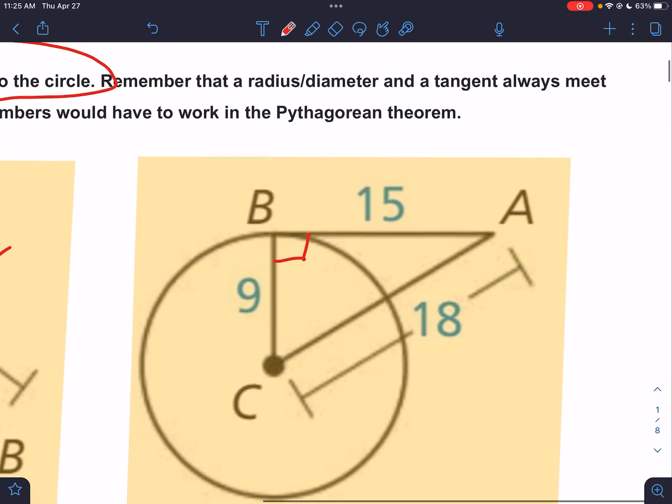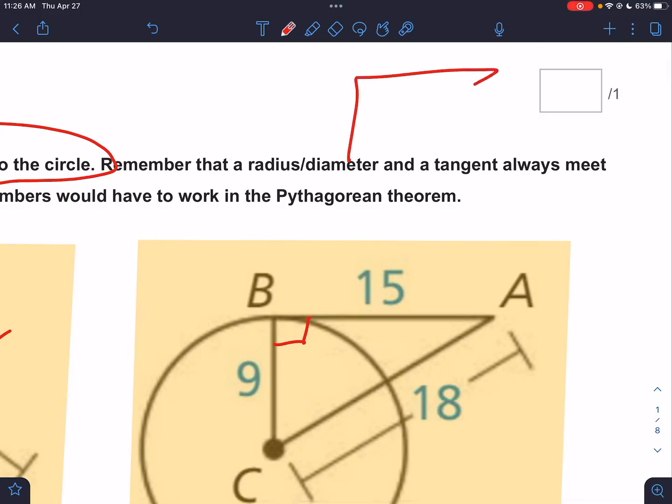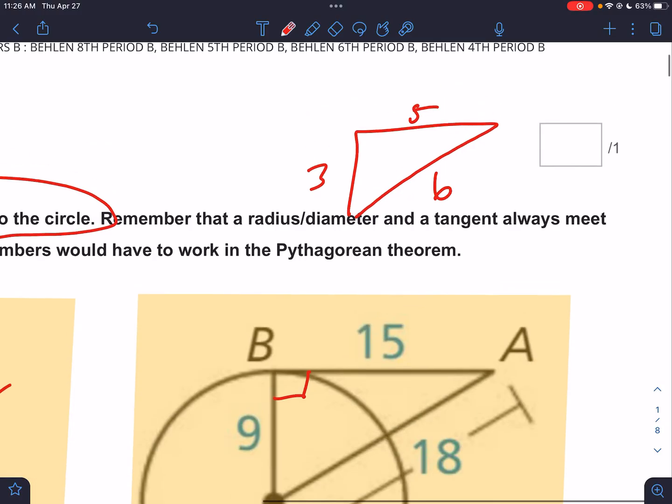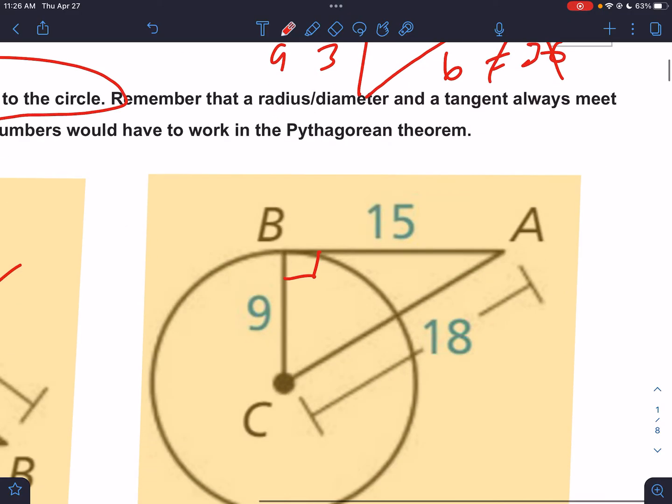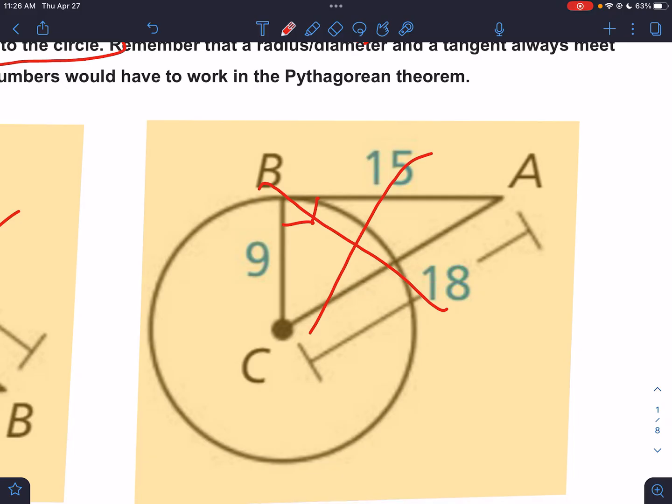Over here, I would reduce the numbers, so I'm going to do a smaller triangle. Divide by three would be three, five, and six. Well, that would be 9 plus 25, that equals 34. This is 36. No. So this one does not fit the Pythagorean theorem.